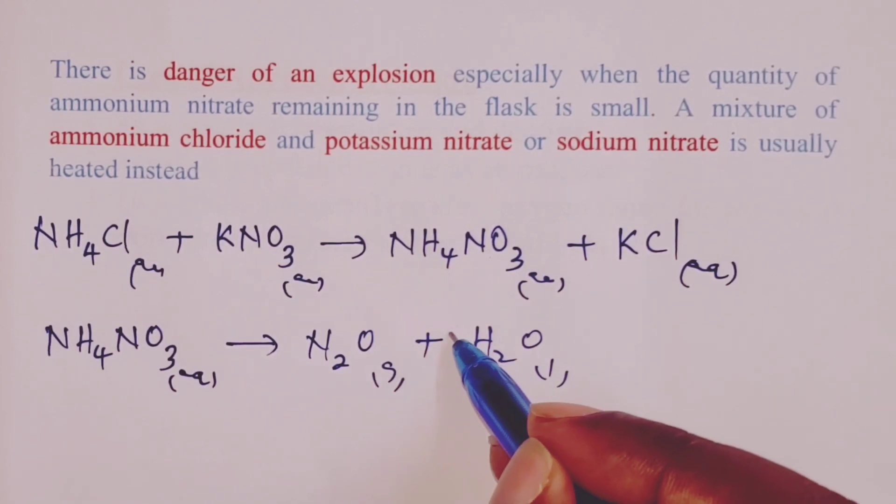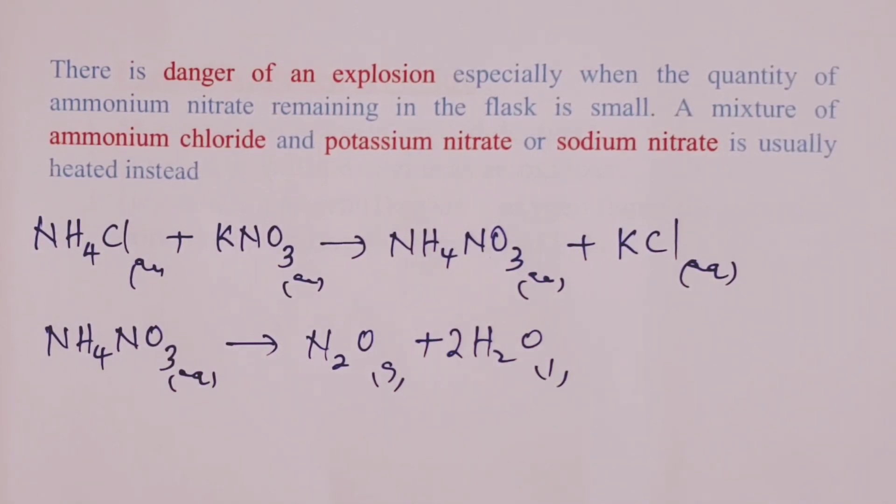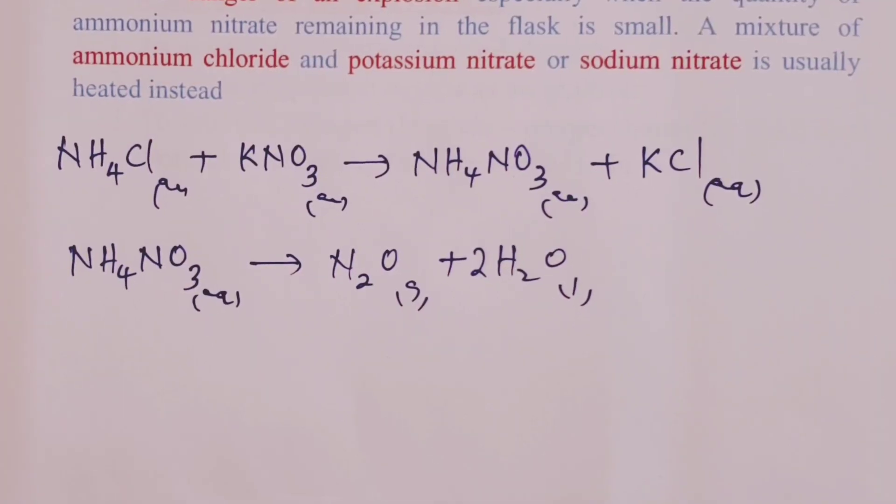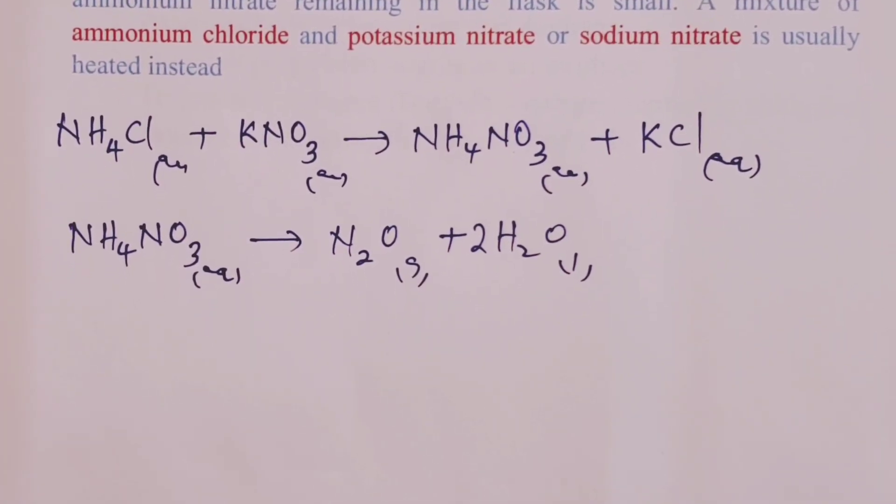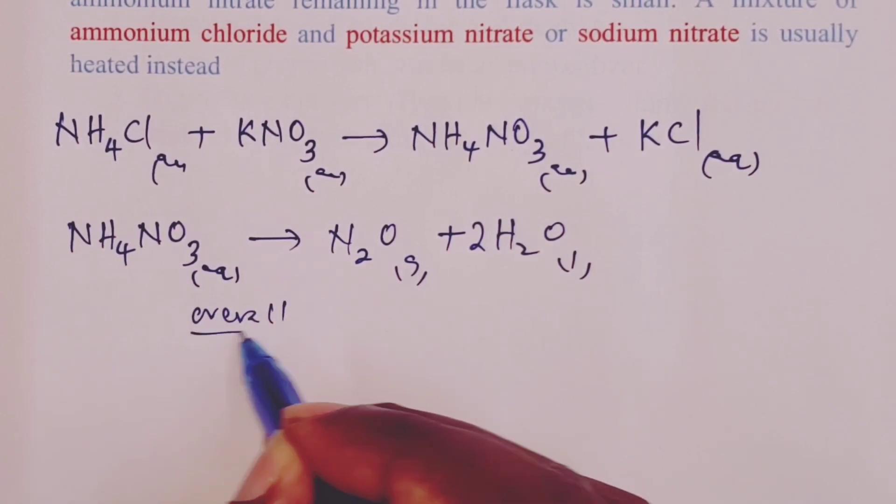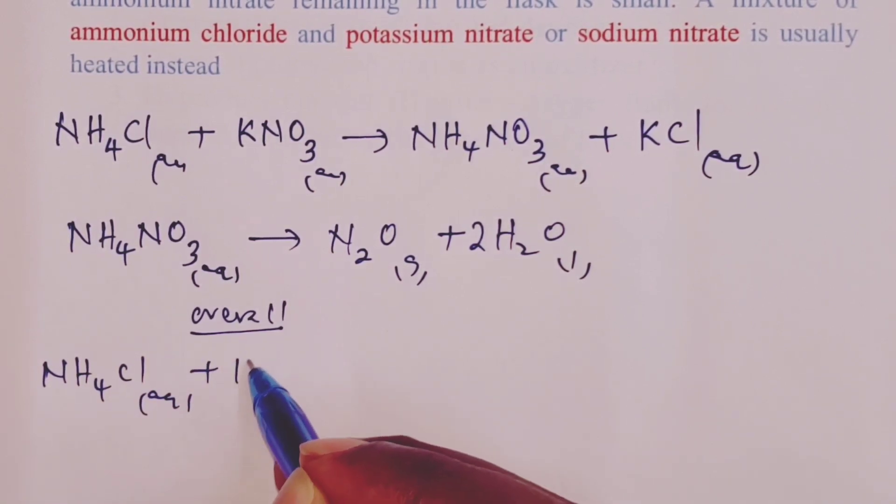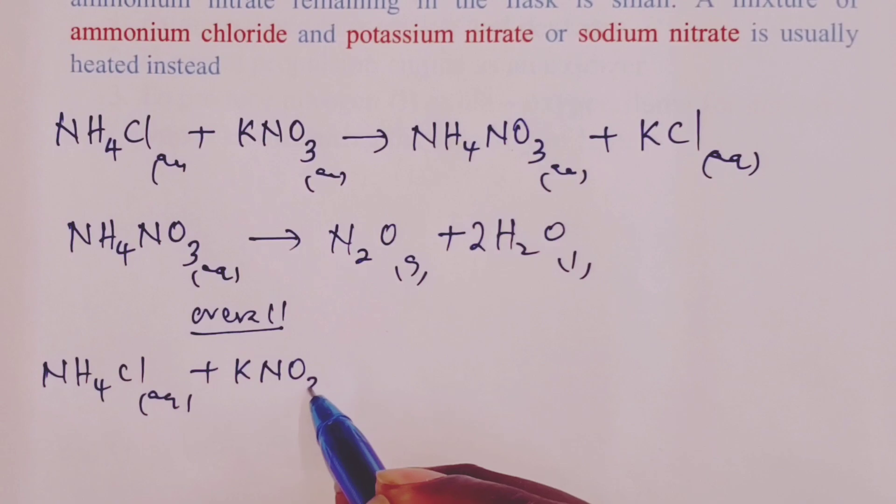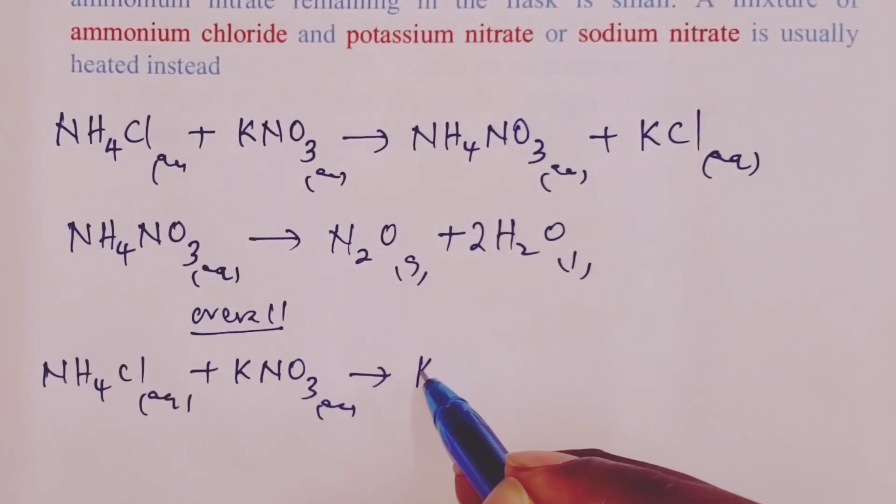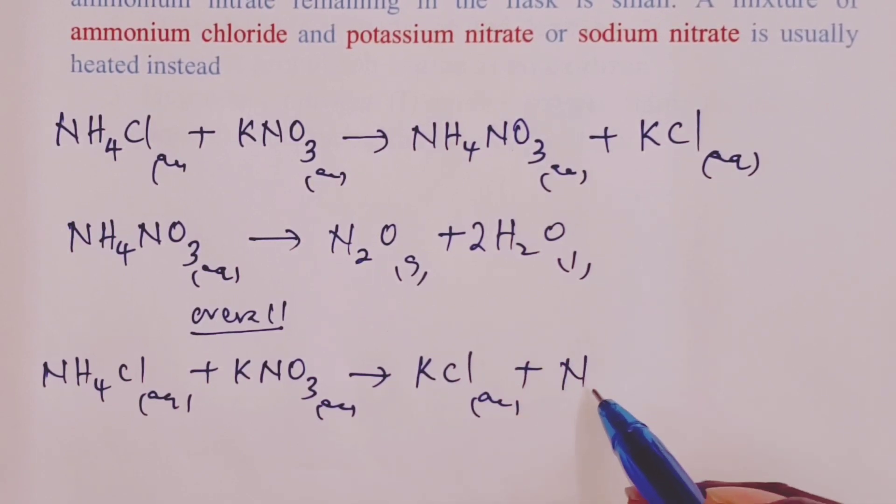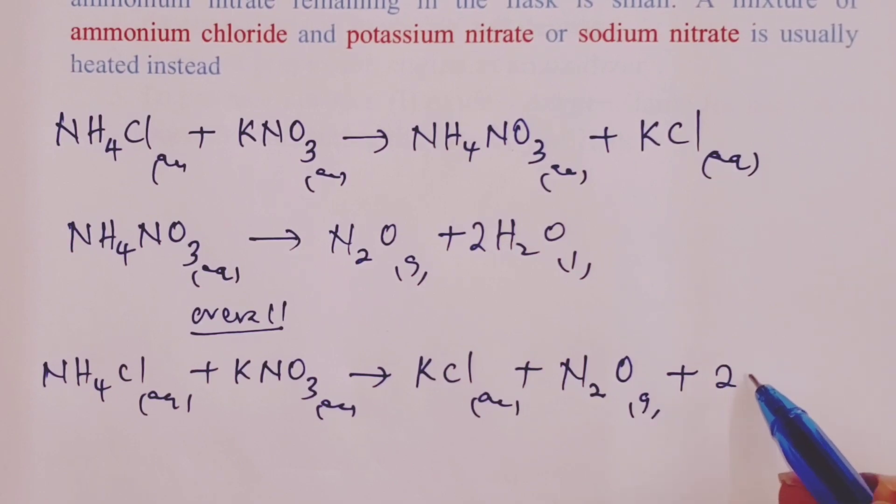Of course, still two moles. And now, we can still go ahead and have an overall equation for the two reactions. So, overall, heating ammonium chloride and potassium nitrate would actually give potassium chloride, nitrogen (I) oxide, and two moles of water. So, that becomes our overall equation.